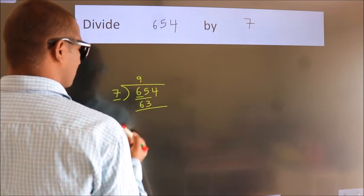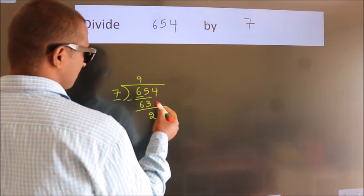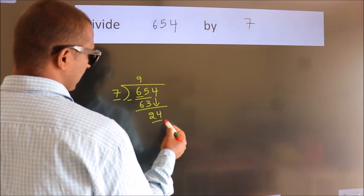Now we should subtract. We get 2. After this, bring down the beside number. So 4 down. So 24.